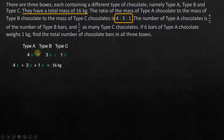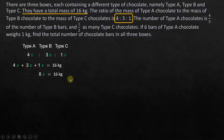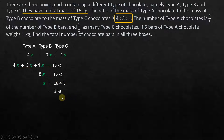The mass of type A is 4x, type B is 3x, and type C is x. Adding them: 4x + 3x + x = 8x = 16 kilograms. In an equation, we can divide both sides by 8 without affecting the equation. So x = 16 ÷ 8 = 2 kilograms.